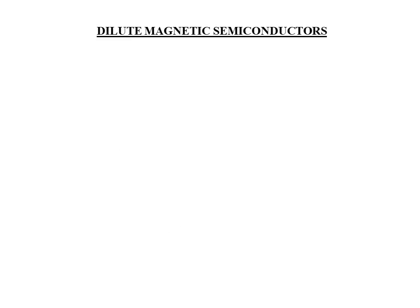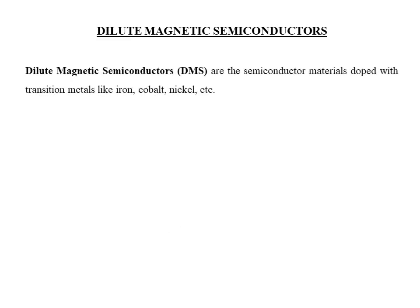Dilute magnetic semiconductors are semiconductor materials which are doped with transition metals like iron, cobalt, nickel, and so on. We choose transition metals for doping because these transition metals are good elemental ferromagnetic materials in nature. Through this doping of a semiconductor material with magnetic elements, we bring about the magnetic property in a semiconductor material.